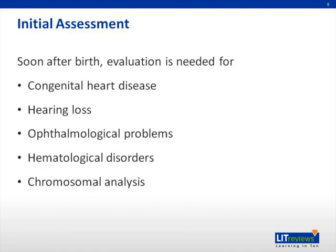Soon after birth, individuals with Down syndrome should undergo evaluation for congenital heart disease, hearing loss, hematologic disorders, and ophthalmologic disorders. Hearing loss is present in 38% to 78% of patients. Ophthalmological disorders affect about 60% of patients and include refractive errors, strabismus, nystagmus, cataracts, and keratoconus. Assessment for congenital heart disease should be performed using an echocardiogram regardless of whether a prenatal echocardiogram was performed. Chromosomal analysis is indicated to evaluate for the possibility of a balanced translocation, which would influence the likelihood that subsequent children in the family may have Down syndrome.